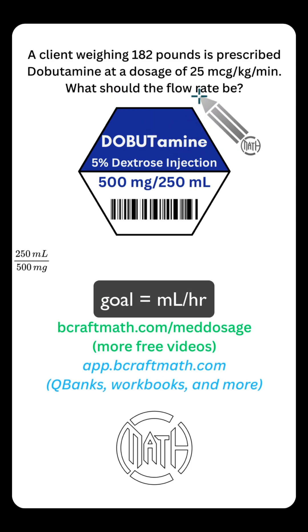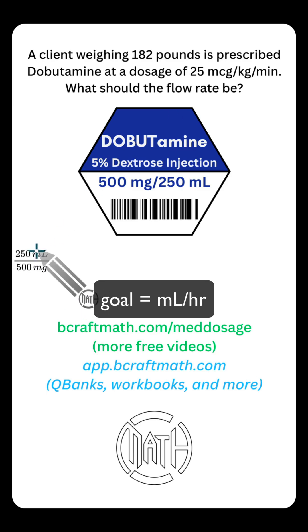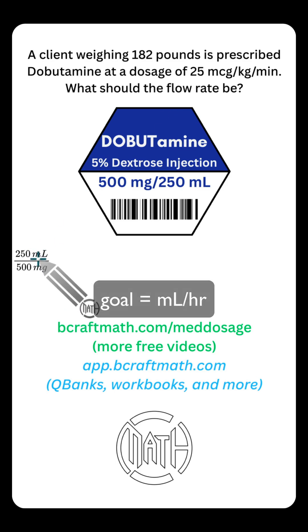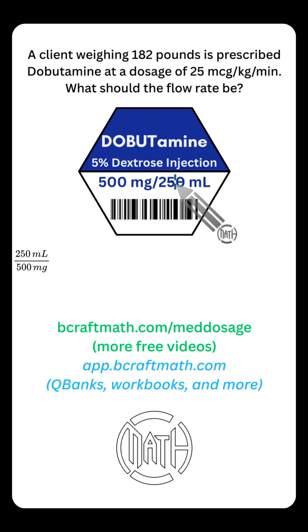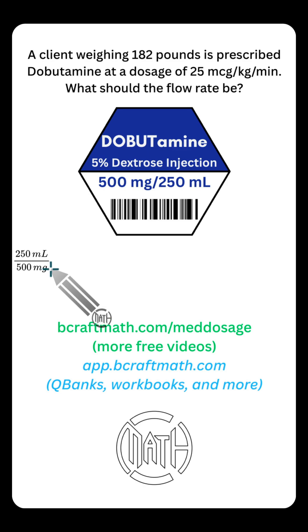Since we're trying to find the flow rate, our goal is milliliters per hour. So I'm starting off with milliliters at the top of my first fraction. Where did this come from? The drug label: 250 milliliters contains 500 milligrams of this medication. Now we've got a long way to go.